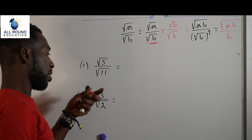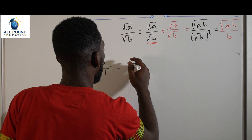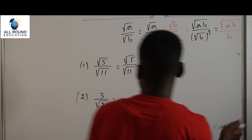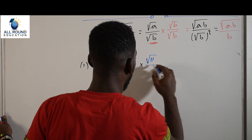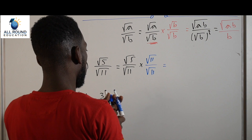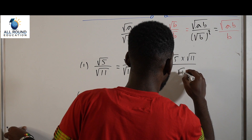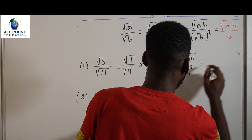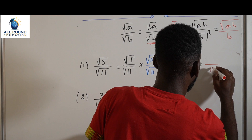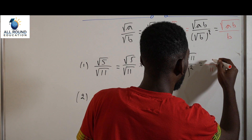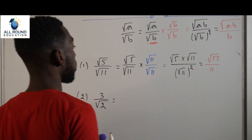So the first example is root 5 over root 11. Let's apply that property. Root 5 over root 11 times root 11 over root 11. When we multiply these together, we have root 5 times root 11 over root 11 squared. This squared will disappear, and you get 11 at the bottom. At the top, it will be root 55. We can't simplify root 55 further, so we just leave it as root 55 over 11.